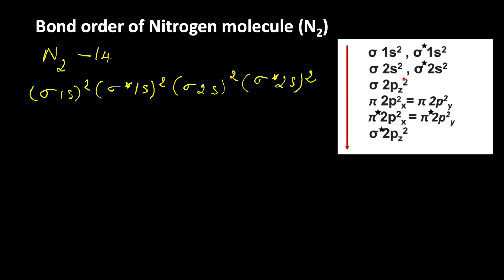Here you have to notice one thing. After filling the sigma star 2s orbital, electrons enter into pi 2px and pi 2py orbitals before entering into sigma 2pz. This is because due to sp mixing, the energy of the s and p orbitals is very close, leading to intermixing of sp orbitals. Because of that intermixing, the sigma 2pz orbital gets higher energy.